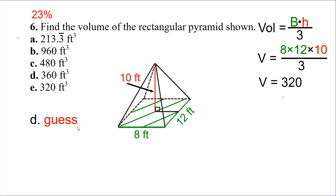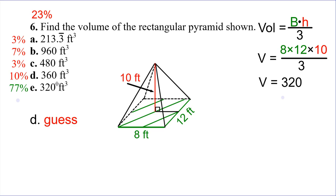Number six: find the volume of the rectangular pyramid shown. Find the area first: eight times twelve gives us ninety-six. Ninety-six times ten is nine hundred sixty. Divide by three gives us three hundred and twenty — so that would be E. The most common mistake was three sixty, which wasn't actually an answer choice. Maybe you did ten times twelve and multiplied by three, which would give you three sixty. Or maybe you just confused it with three hundred and twenty and circled the wrong one.